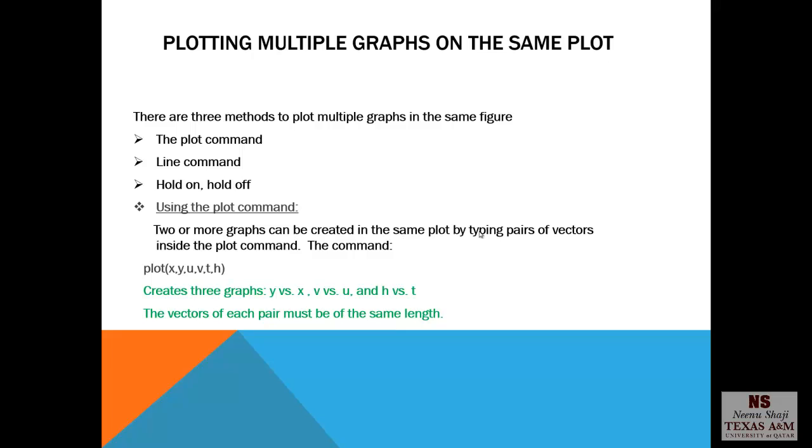Plotting multiple graphs on the same plot. There are three methods to plot multiple graphs in the same figure. First we have the plot command. Then the line command. Hold on, hold off. Using the plot command, two or more graphs can be created in the same plot by typing pairs of vectors inside the plot command. So plot x,y u,v t,h. These are pairs of vectors. So it creates three graphs, y versus x, v versus u, and h versus t. The vectors of each pair must be of the same length.